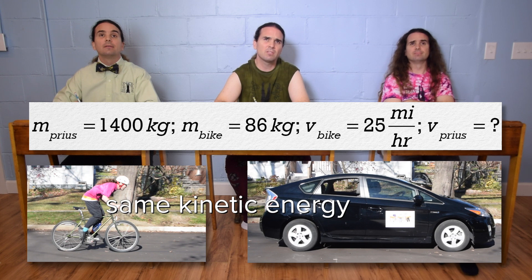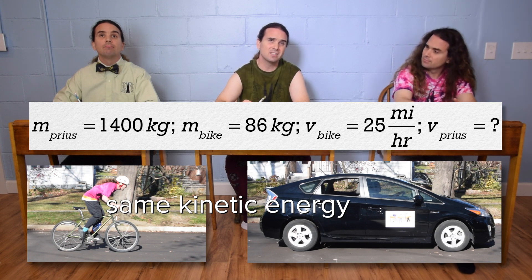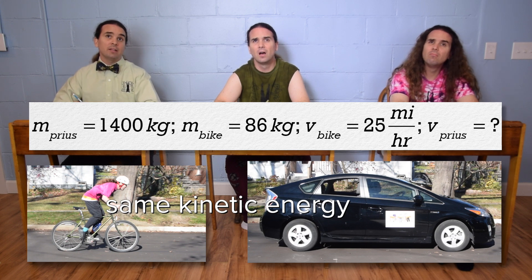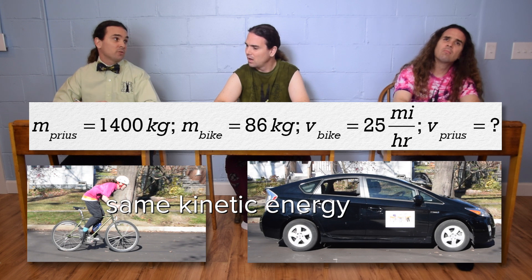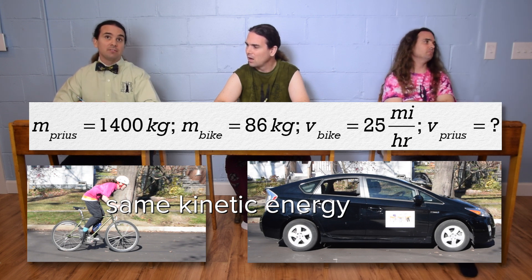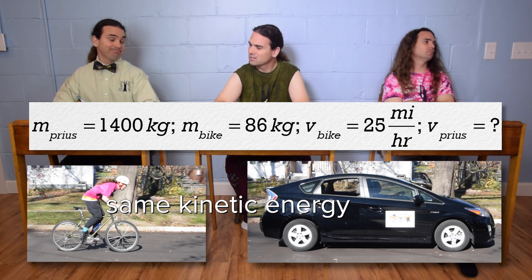Don't we need the velocity of the bike because it's velocity, not speed, in the kinetic energy equation? Not really, remember the velocity is squared, so we really only need the magnitude of the velocity, and instantaneous speed is the magnitude of the instantaneous velocity. Sure.